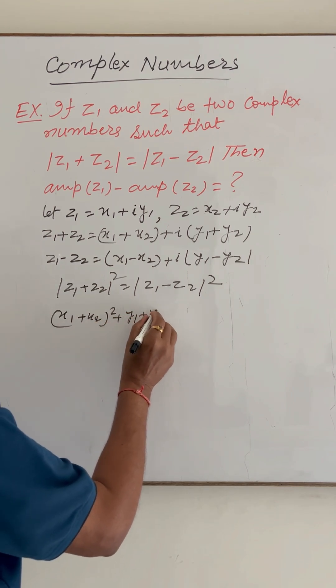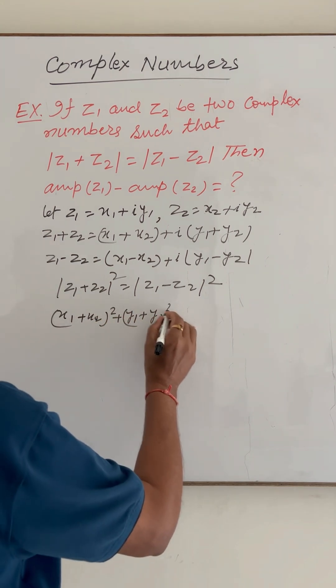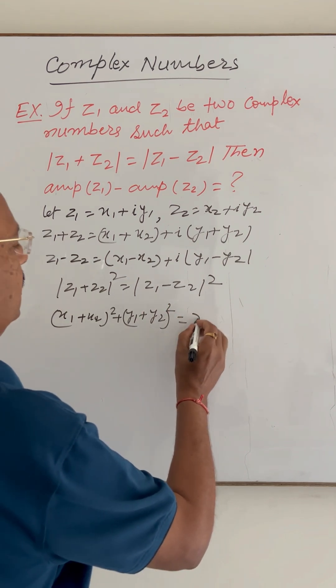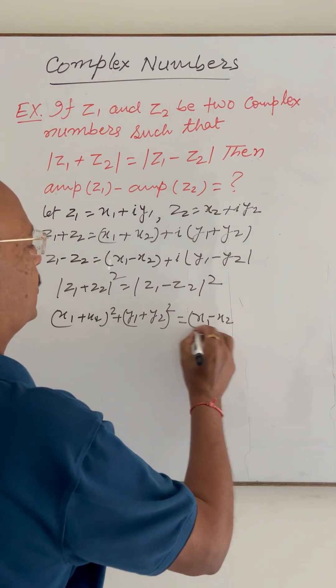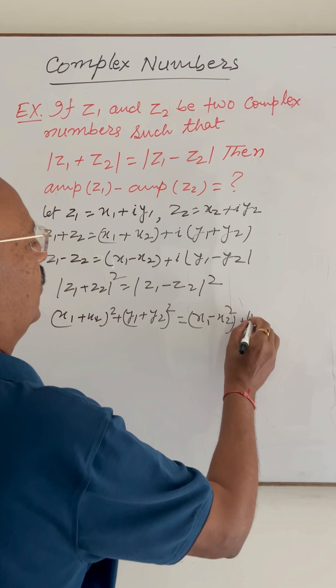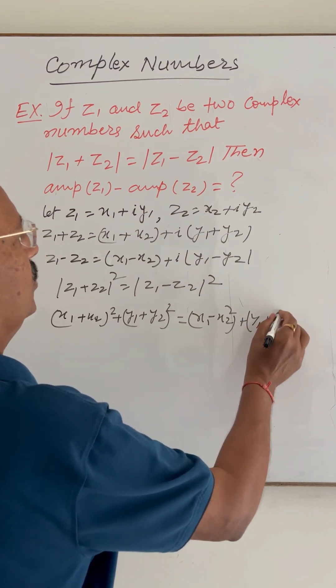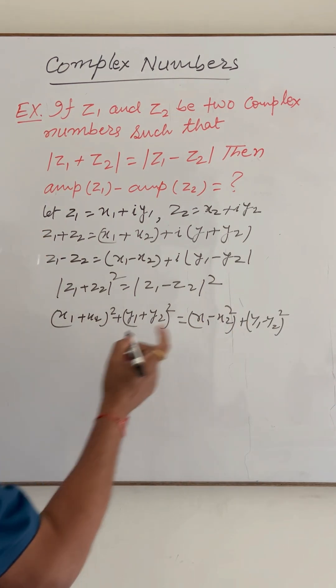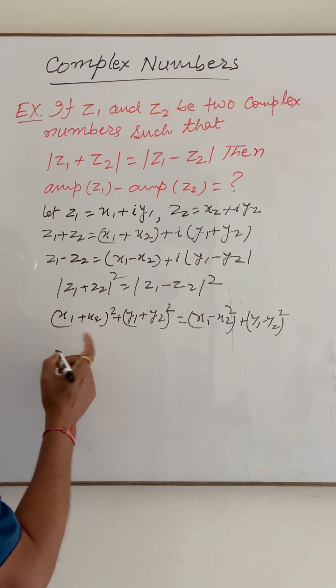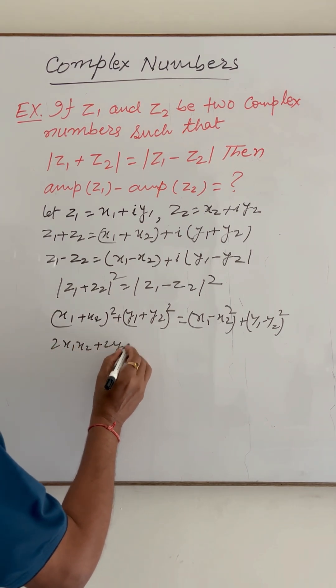And on the right hand side, this will be (x1 - x2) whole square plus (y1 - y2) whole square. Simplifying the left hand side, we get 2*x1*x2 plus 2*y1*y2.